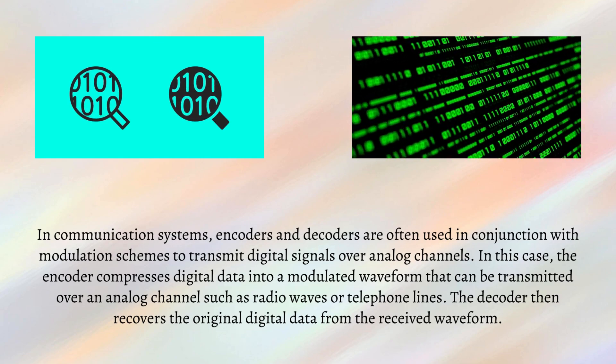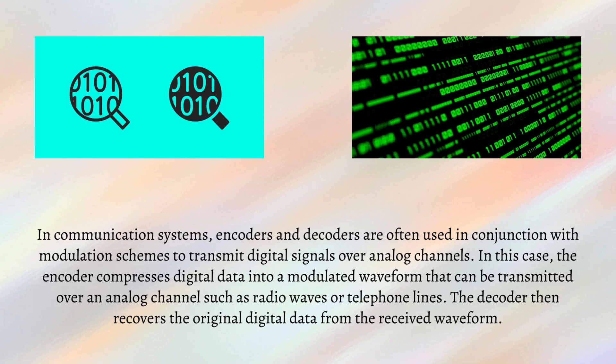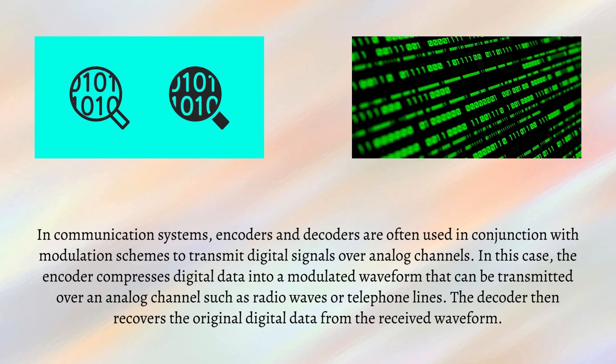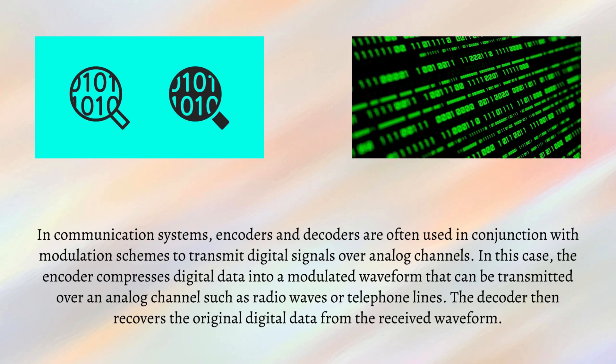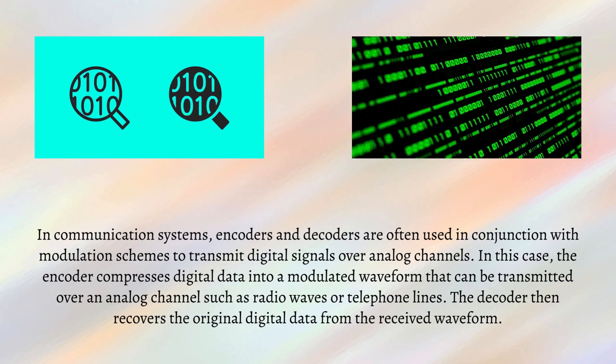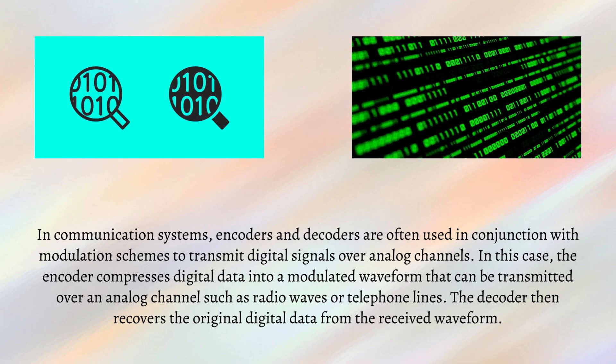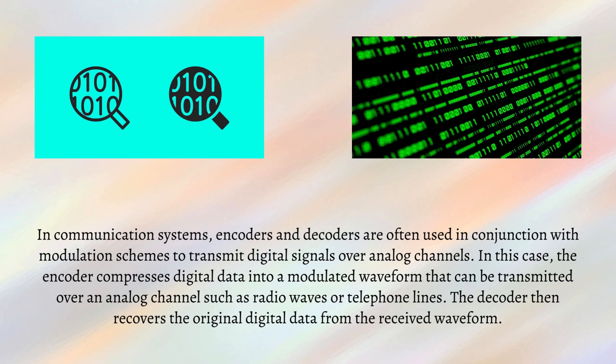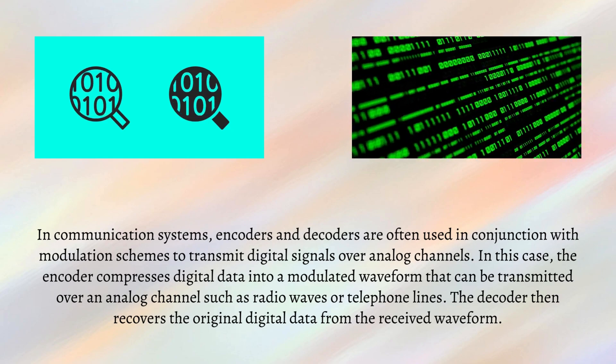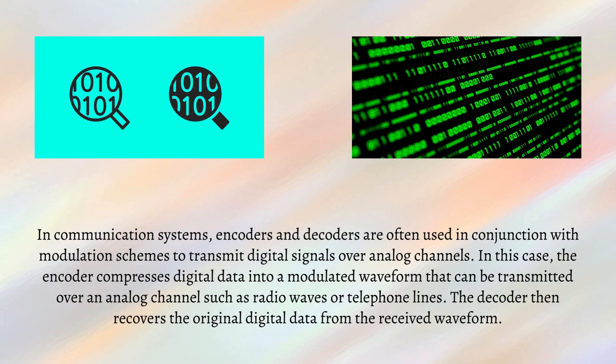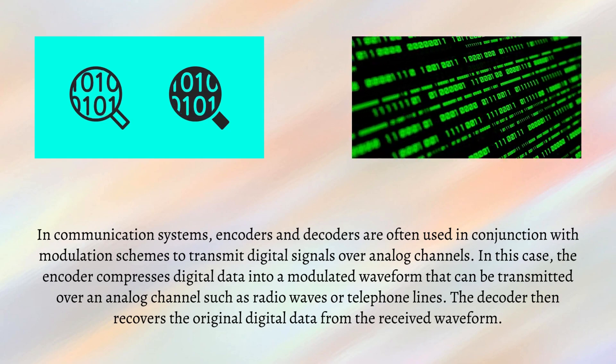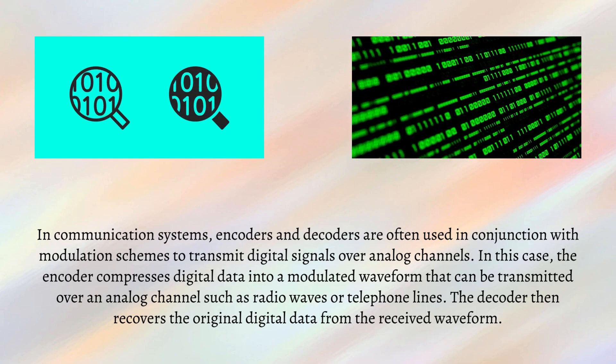In communication systems, encoders and decoders are often used in conjunction with modulation schemes to transmit digital signals over analog channels. In this case, the encoder compresses digital data into a modulated waveform that can be transmitted over an analog channel such as radio waves or telephone lines. The decoder then recovers the original digital data from the received waveform.